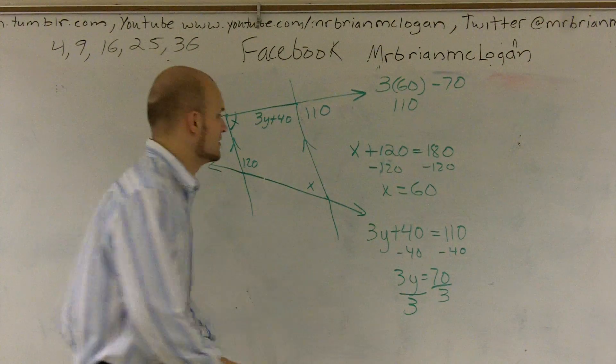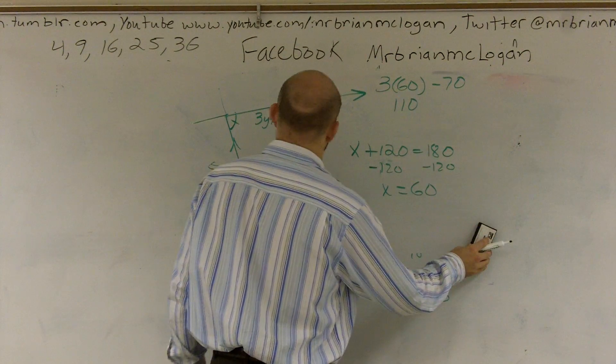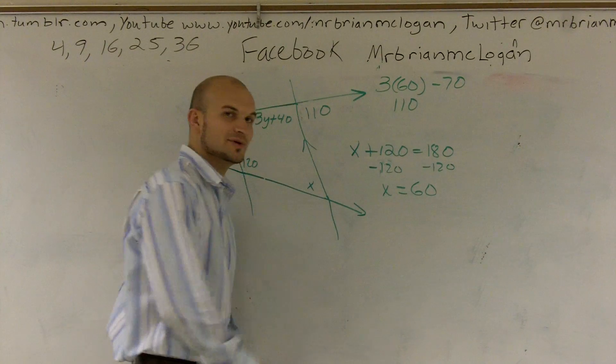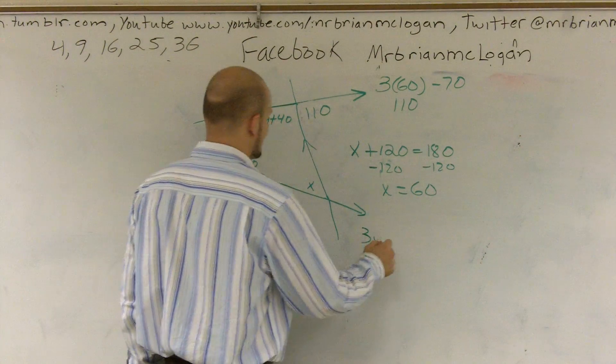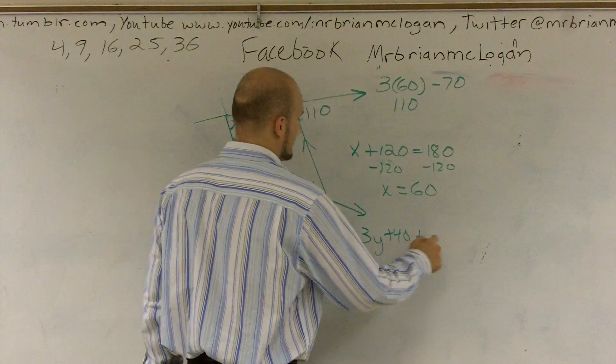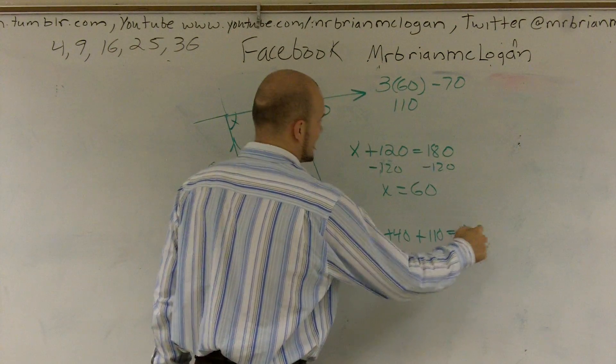Oh, my god. Why do I keep on doing this? Of course, you know these don't equal to each other, right? 3y plus 40 plus 110 equals 180.